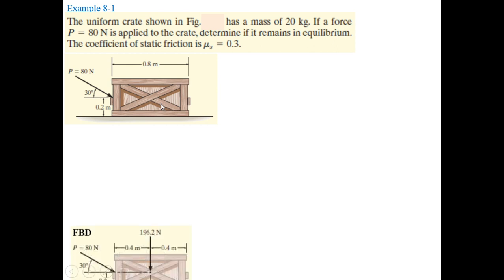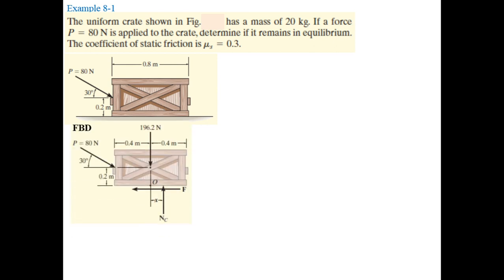Since we need to determine whether this body will remain in equilibrium, we first draw its free body diagram. The dimensions of the rigid body are given: the crate has dimensions of 0.8 meters by 0.4 meters. The center of gravity is therefore at 0.2 meters in the vertical direction and 0.4 meters in the horizontal direction. The weight of the box, 20 × 9.81 = 196.2 Newtons, acts at the center of gravity.